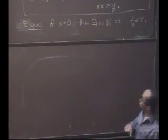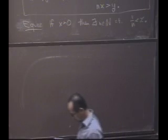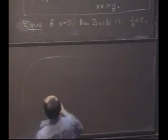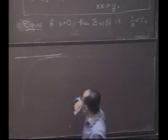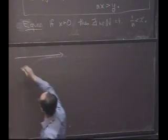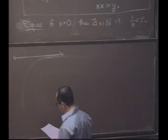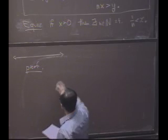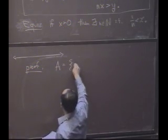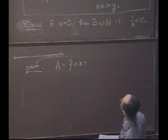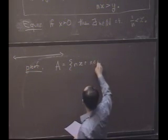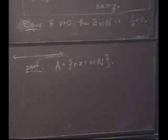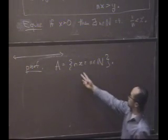So how would I prove a statement like this? So if I wanted to think about this, one way to think about it is the following. Let's suppose I have a number line here. Let's look at the collection of all multiples of x, okay, for n in the natural numbers.